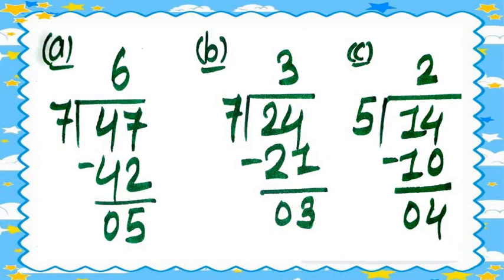Question 3c: 40 divided by 5. In the table of 5, 40 will come. Five eights are 40. So 40 minus 40 equals zero. The quotient is 8 and the remainder is 0.